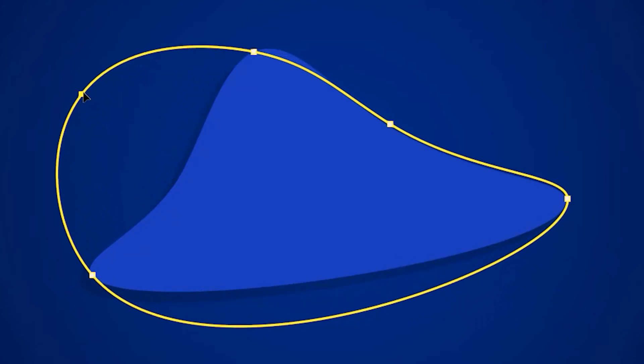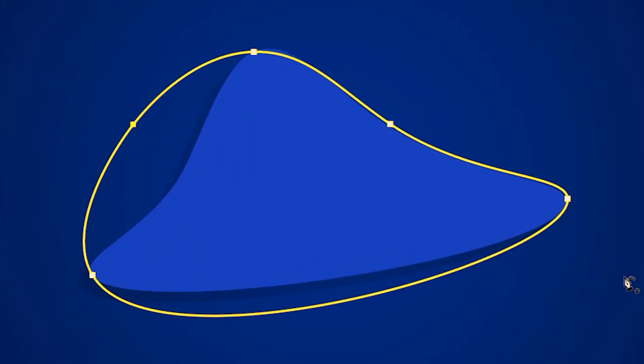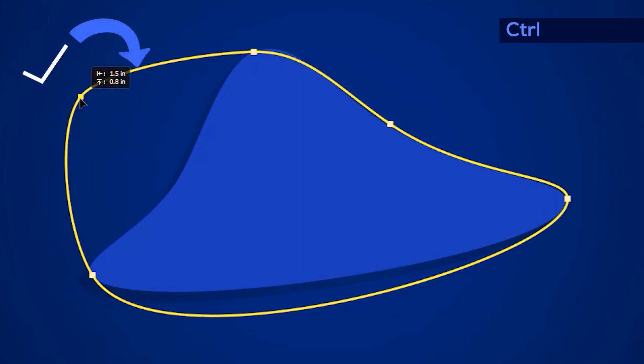When we move the anchors with the curvature pen tool, it looks something like this. You can see it's not only controlling this curve, but this curve as well. But if I grab my direct selection tool by pressing Ctrl key, you can see that only this curve which is associated with the anchor is moving and not this one.